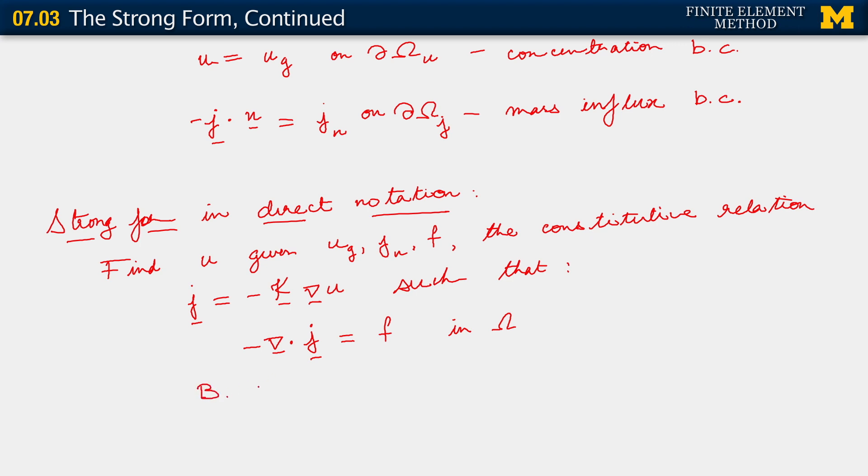The boundary conditions: the Dirichlet boundary condition is straightforward because it's only on the scalar unknown. U equals u_g on partial omega u. And, the Neumann boundary condition is minus j dot n equals j_n on partial omega sub j. And this actually is it, for as far as our strong form is concerned in direct notation.